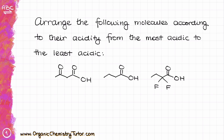Imagine you are taking your organic chemistry exam and you have this question: arrange the following molecules according to their acidity from the most acidic to the least acidic. Your hand reaches to the pKa table and you see a problem — this is a carboxylic acid, and this is a carboxylic acid, and the last molecule is also a carboxylic acid. But your pKa table only lists one pKa for a carboxylic acid functional group. So what do you do in this case?